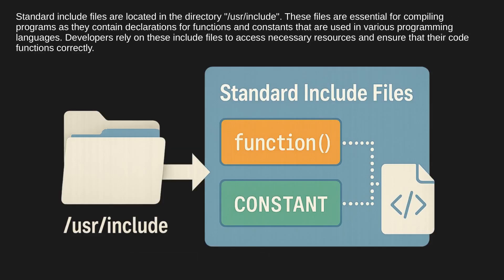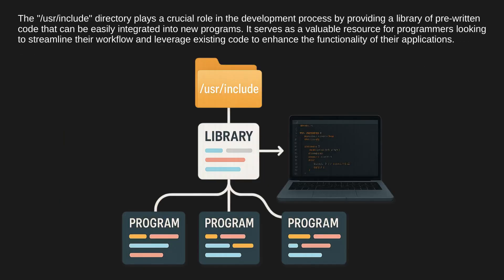Standard include files are located in the directory /usr/include. These files are essential for compiling programs as they contain declarations for functions and constants that are used in various programming languages. Developers rely on these include files to access necessary resources and ensure that their code functions correctly. The /usr/include directory plays a crucial role in the development process by providing a library of pre-written code that can be easily integrated into new programs, serving as a valuable resource for programmers looking to streamline their workflow.